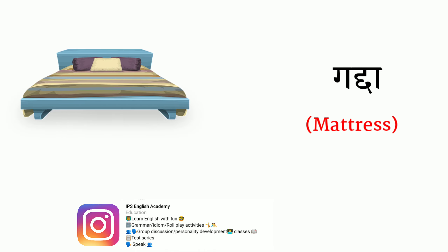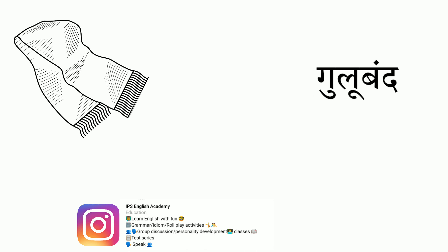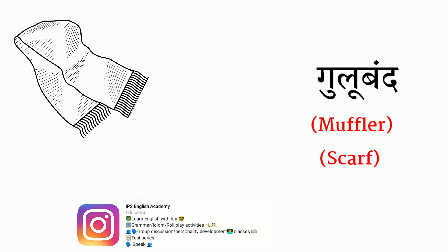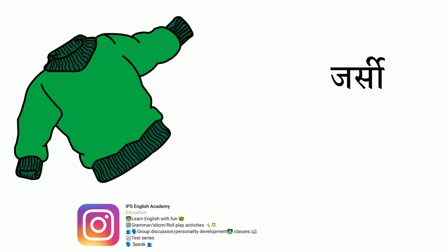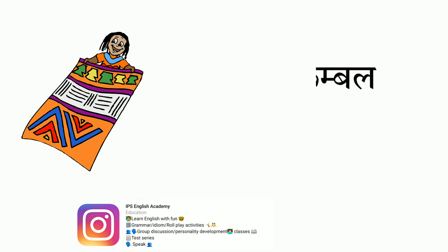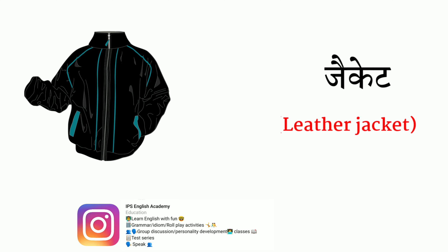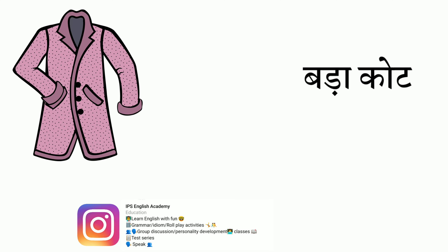Next we have 'bandar topa' — that's called a monkey cap, which people wear in the cold. Next we have 'mojay' — that's called socks. Next we have 'shal' — shal is called shawl. Next word, 'dastane' — that's called gloves. And next we have 'rajai' — that's called quilt. And 'gadda' — that's called mattress.